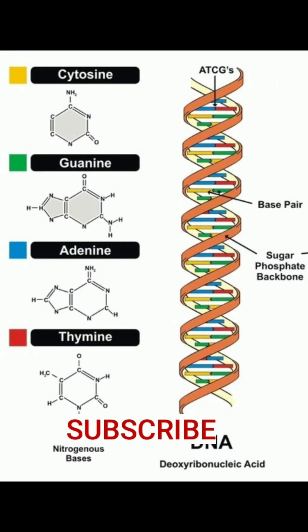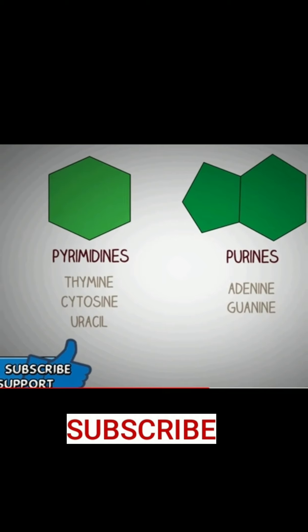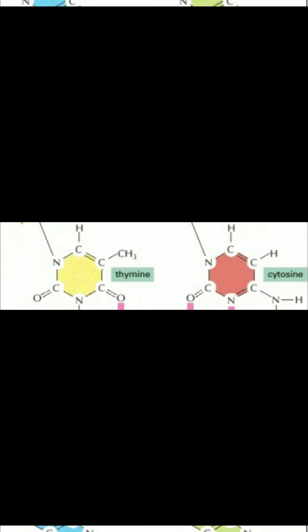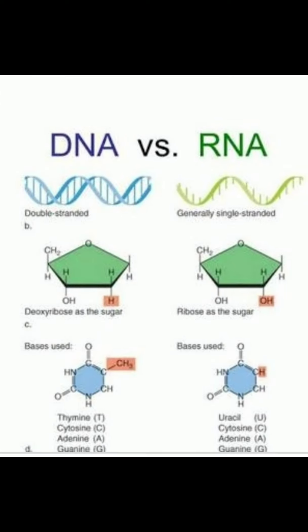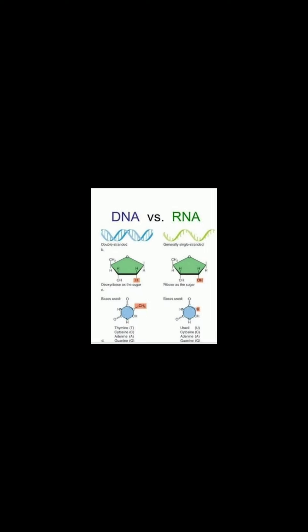The most important nitrogenous bases are five types in nucleic acids, that is in DNA and RNA: adenine, guanine, cytosine, thiamine, and uracil. Adenine and guanine have a nine-membered fused double ring purine-like structure with nitrogen atoms at positions one, three, seven, and nine. Whereas cytosine, thiamine, and uracil have a six-membered single ring pyrimidine-like hexagon structure with nitrogen atoms at the first and third positions. In DNA, the first four types of nitrogenous bases are found: adenine, guanine, cytosine, and thiamine.